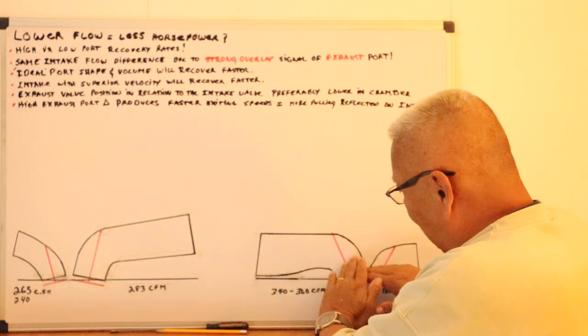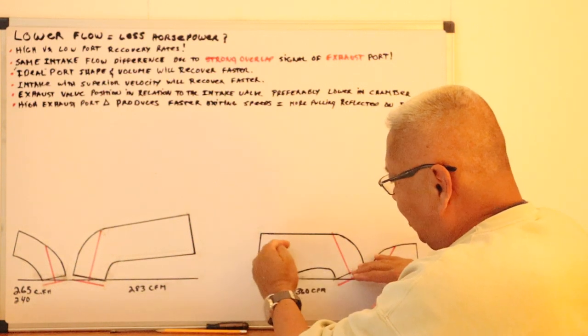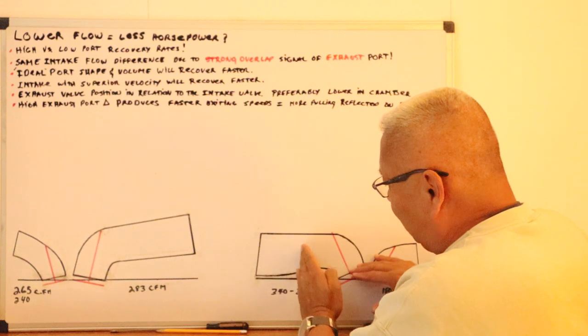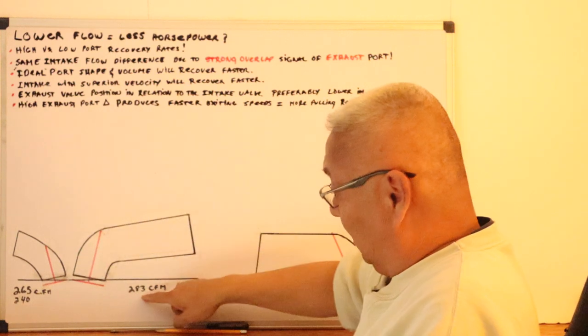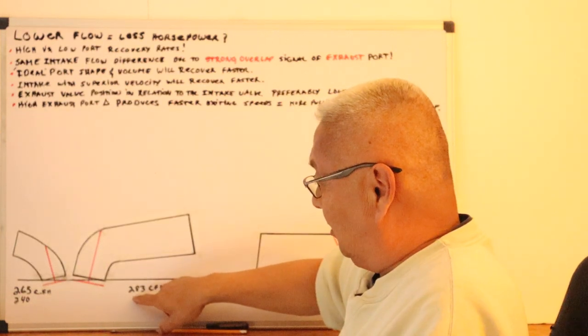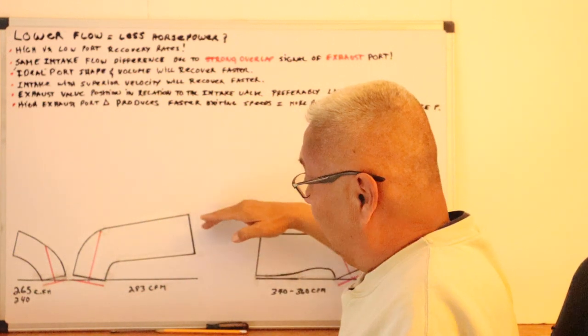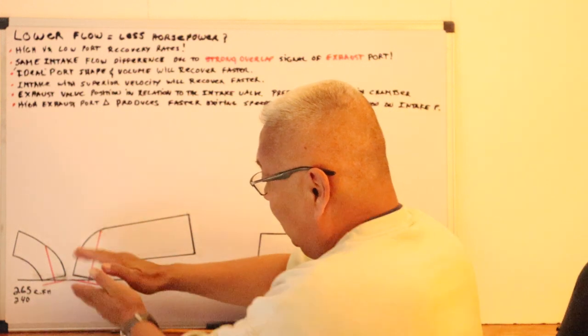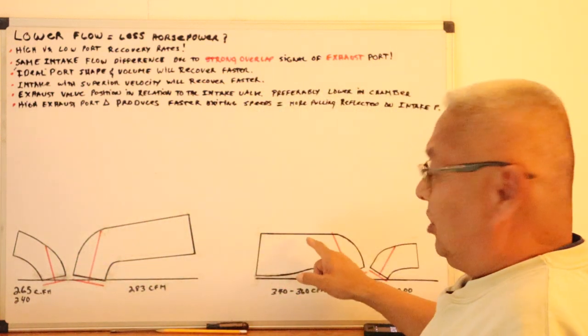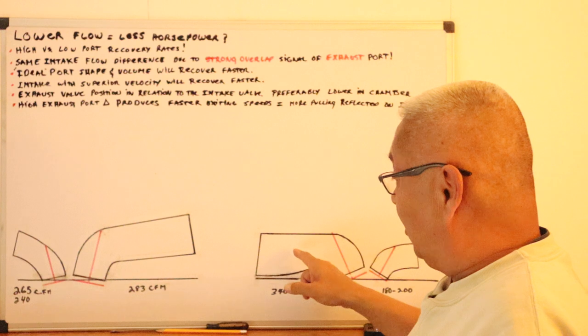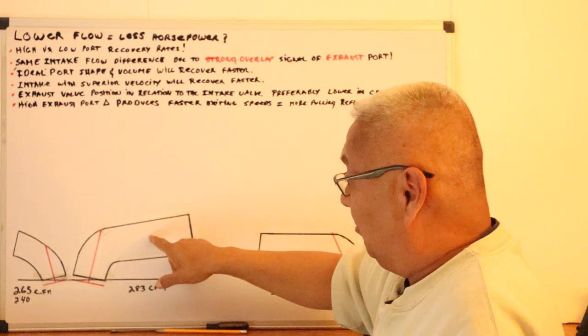Here, when the intake valve closes, the column stacks up, right? But since it's a slower speed, let's just say it stacks up to half. Here, because it's a high port, even though it's lower CFM on the flow bench, the velocity is much faster. So once the intake valve closes, it stacks up here rapidly, real quick. As opposed to here, lower velocity, it doesn't stack up as quickly. Here, it stacks up big time.